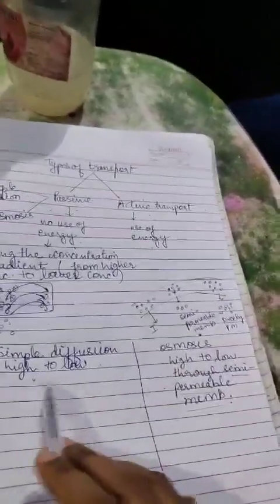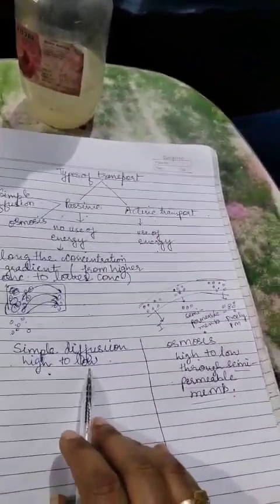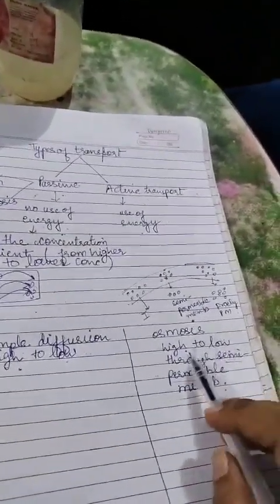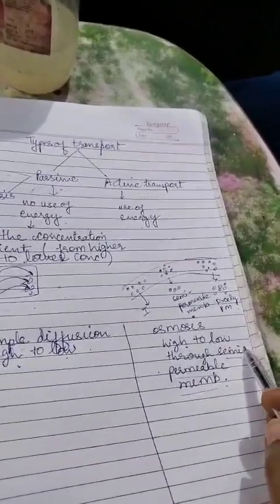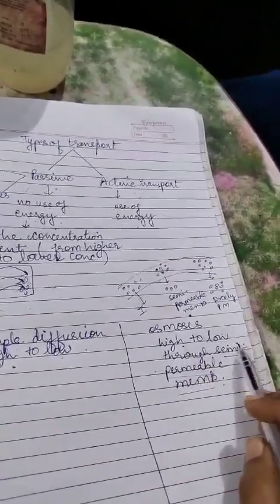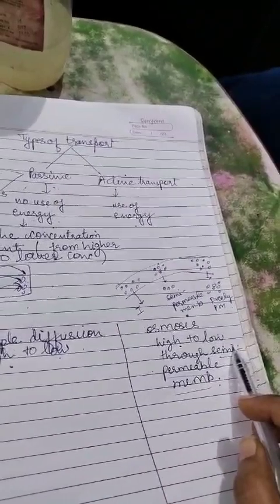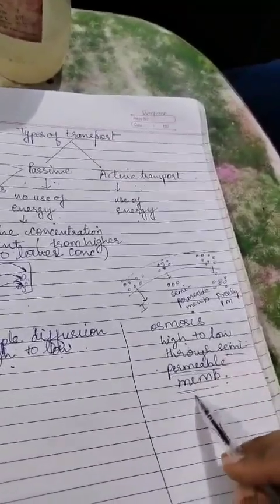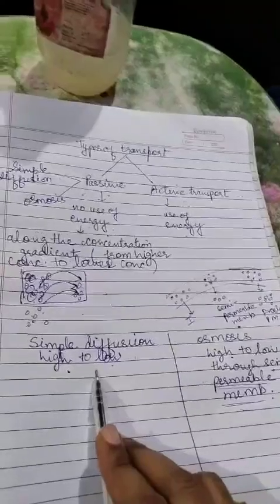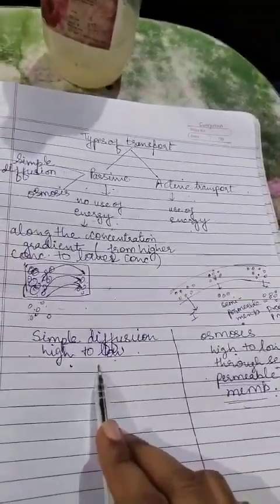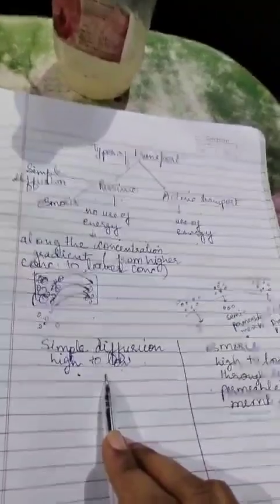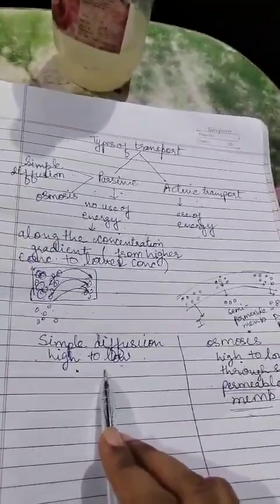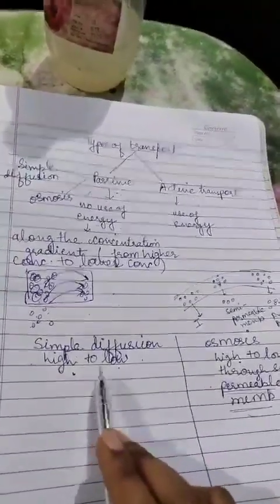What is the difference between osmosis and diffusion? In simple diffusion, molecules move from higher concentration to lower concentration. In osmosis, there is also movement of substances from the region of higher concentration to lower concentration, but it is through a semi-permeable membrane — there is selection of molecules before transfer. But in simple diffusion, a semi-permeable membrane is not involved.